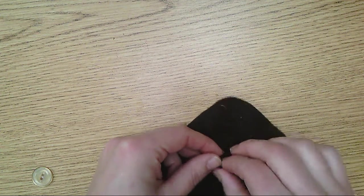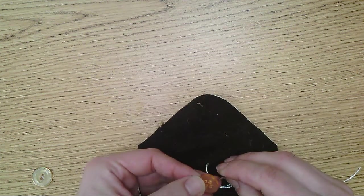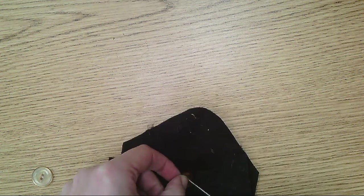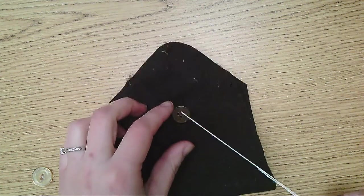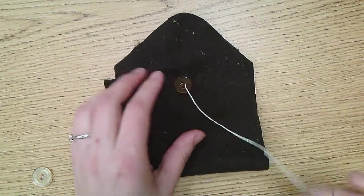So what I'm going to do is I'm going to start on the back where I want my button to go. And I'm going to put my string through the first hole and pull it until you hit your knot.